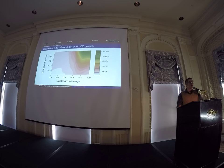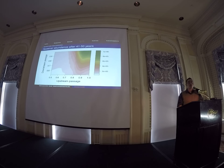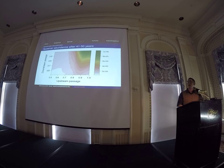Stepping up the complexity a little bit, we can now look at interactions between upstream and downstream passage. On the x-axis we have upstream passage rates, and on the y-axis we have downstream passage rates, varying from 50% to 100%. You can imagine this map like a topographic relief map, where the green is a mountain and as you fall away into the red you start to meet the valleys. Instead of elevations, we have abundance of spawners after 41 to 50 years — that specific time frame is from the management plan for the Penobscot River.